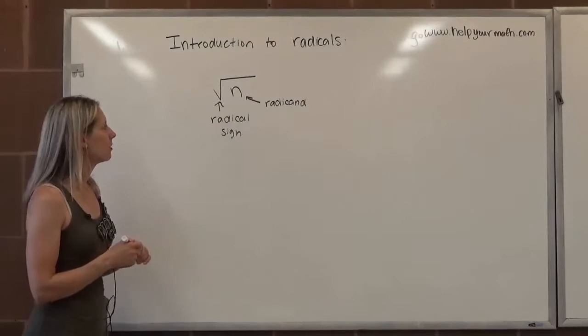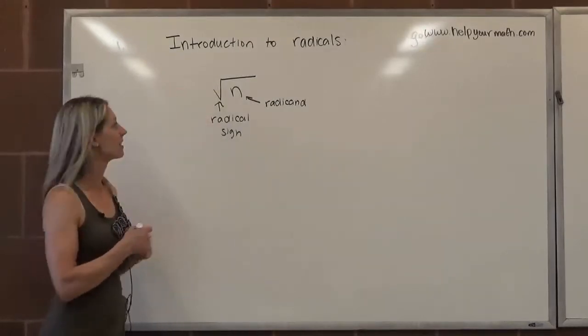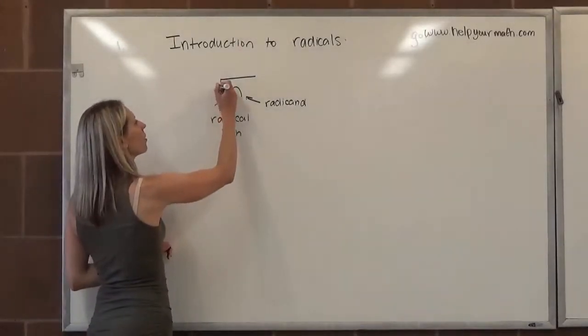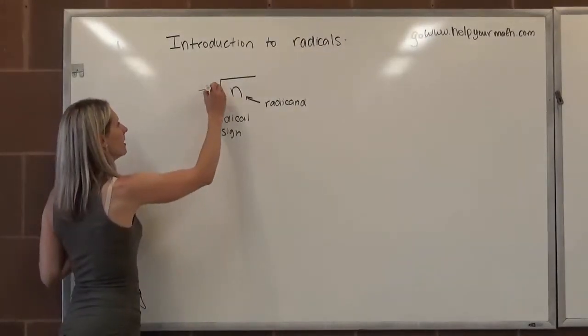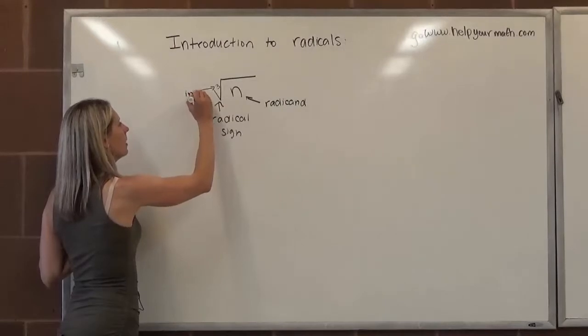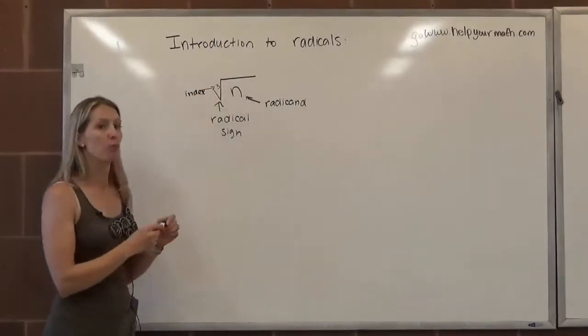Other times with radicals, there could be what's called an index. So we could see a little 3 here or a 4 or a 5. So that guy here is called the index, and that's changing which root we're finding.